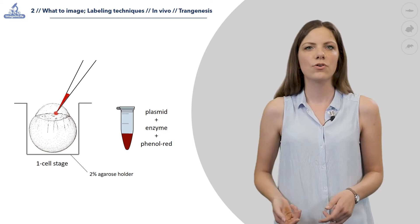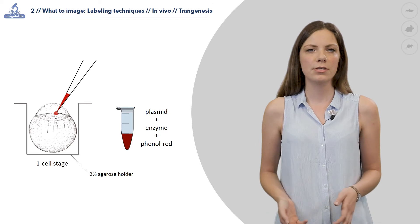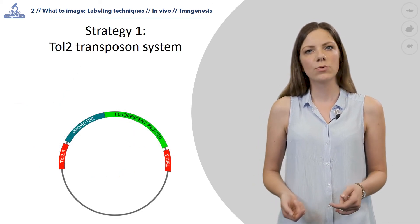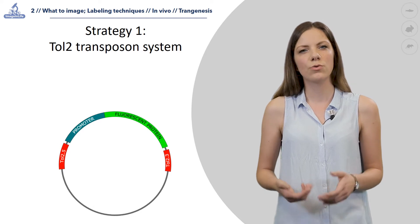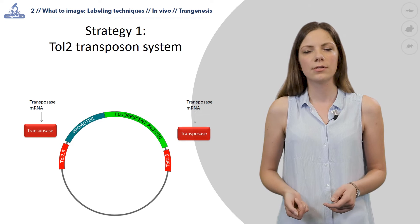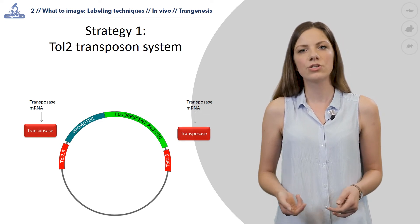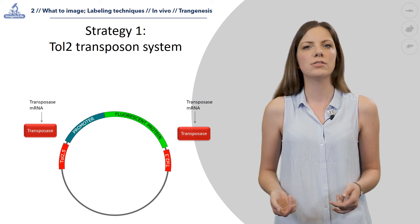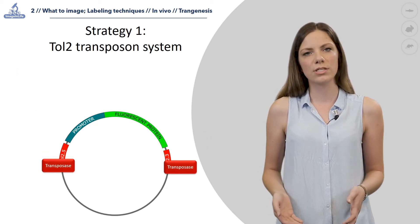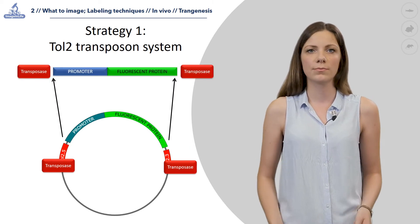There are different strategies of DNA insertion into the zebrafish genome. A very popular system is the Tol2 transposome system, in which the sequence we want to inject is surrounded by two regulatory sequences from the Tol2 element. This DNA construct is injected together with the messenger RNA encoding for a transposase gene. Transposase is the enzyme that recognizes Tol2 sequences and inserts the fragment between them into the genome.